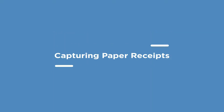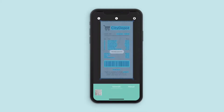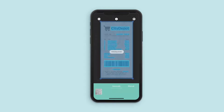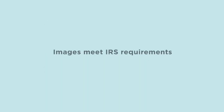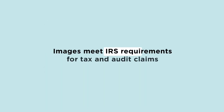Start with capturing a receipt. Hover over the receipt and let the camera do all the work. Double check to make sure your receipt capture is clear. These images meet IRS requirements and can back up tax and audit claims.